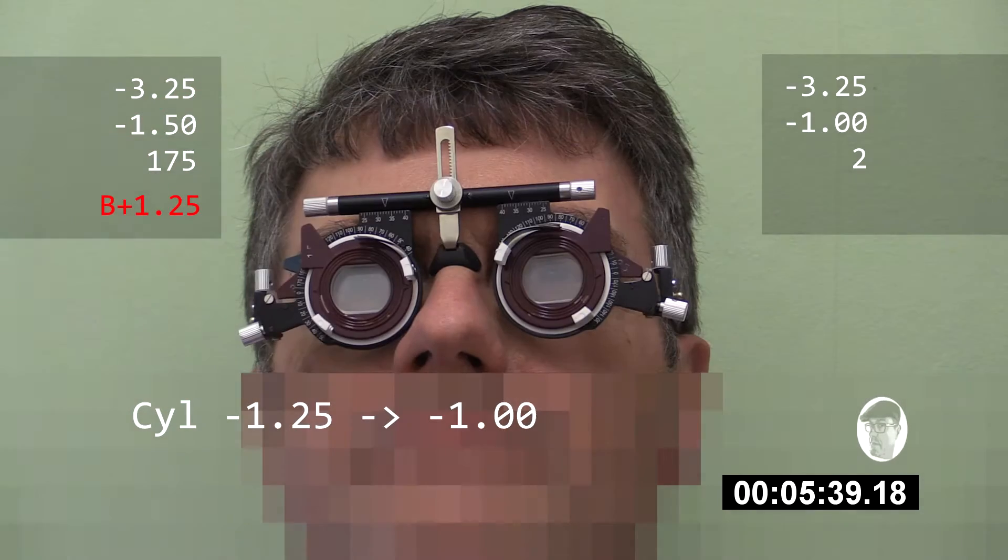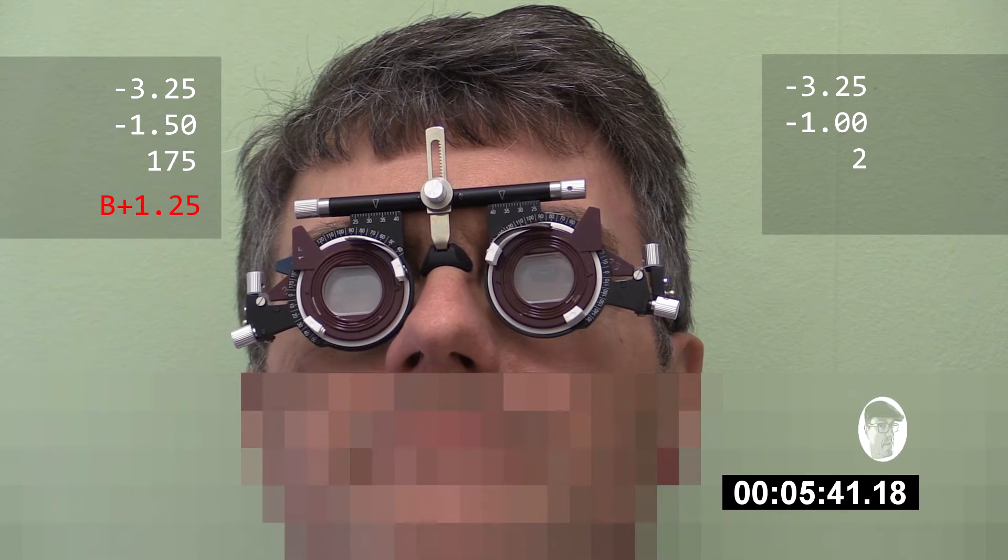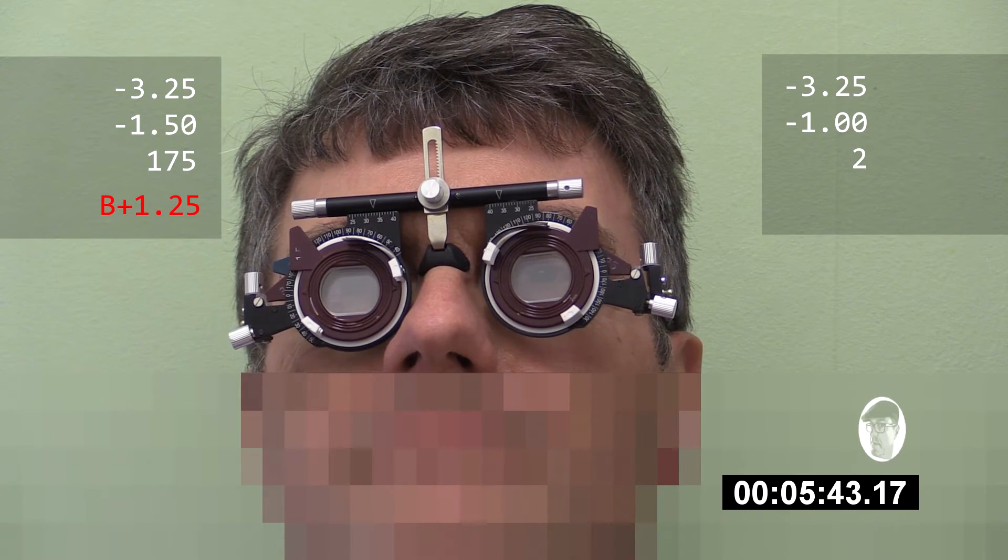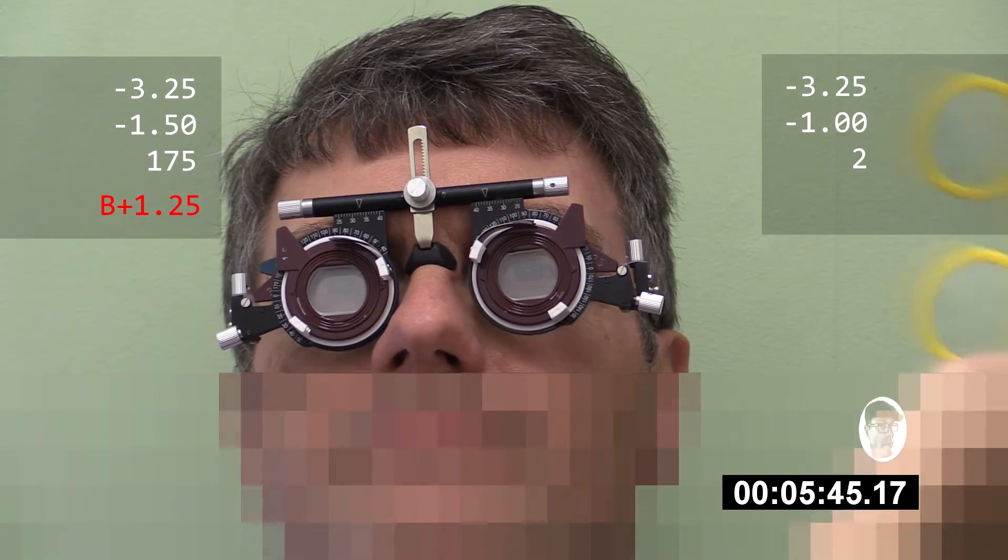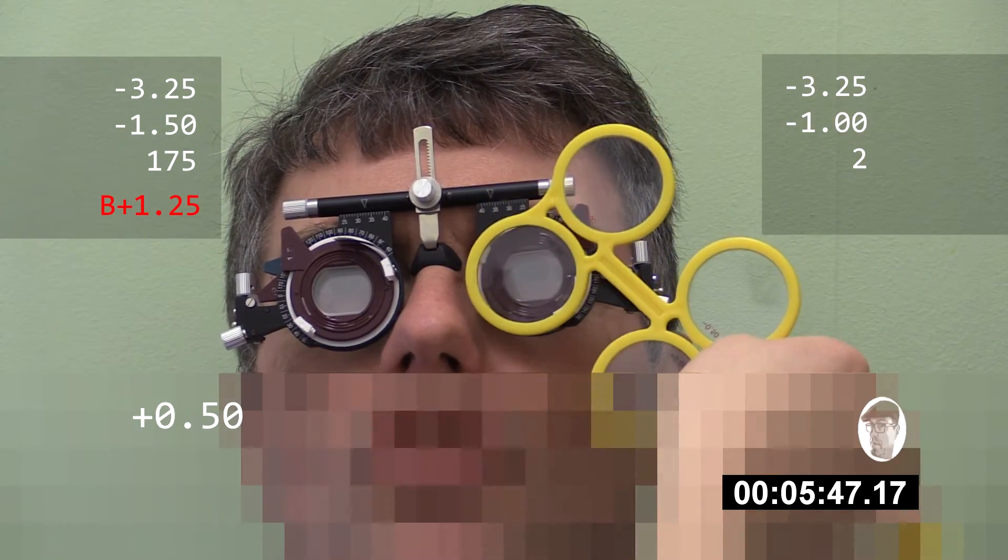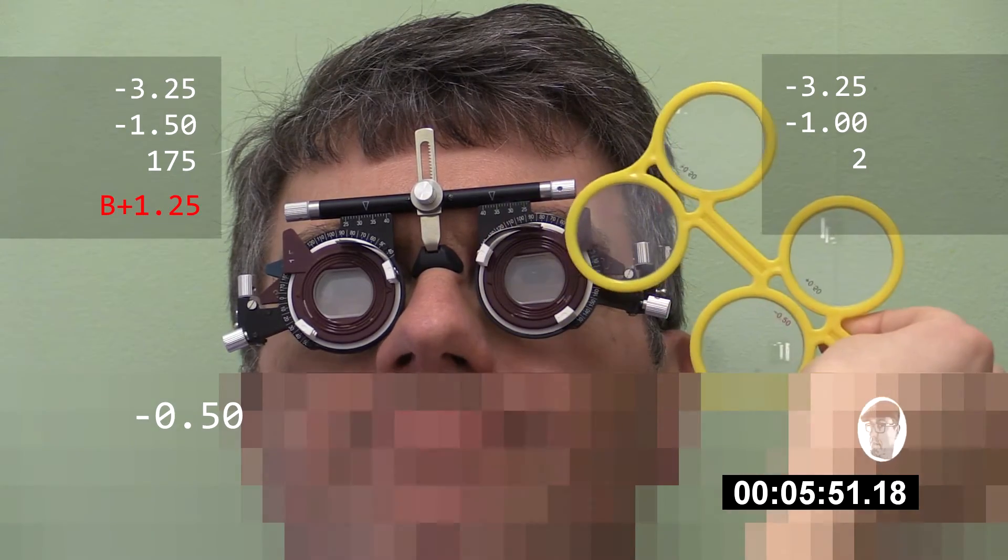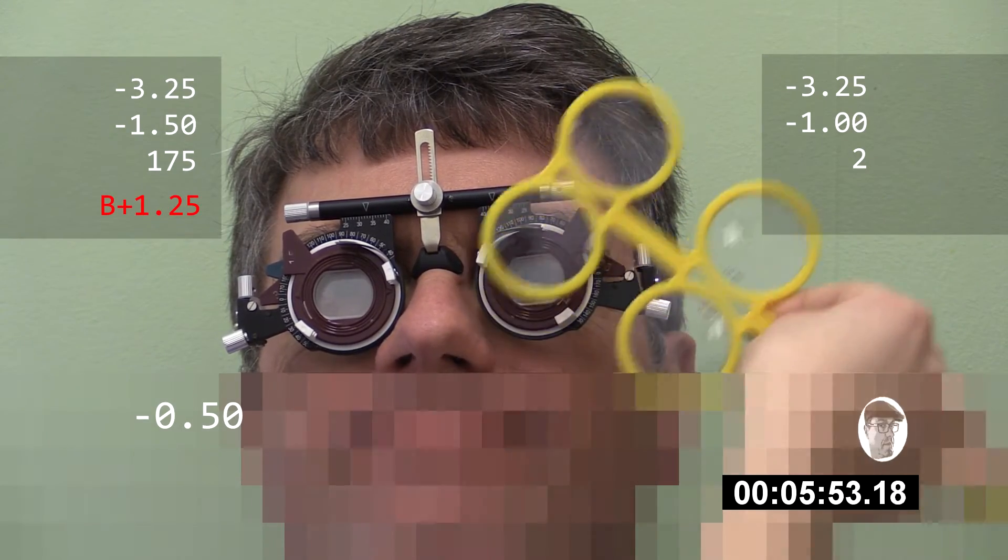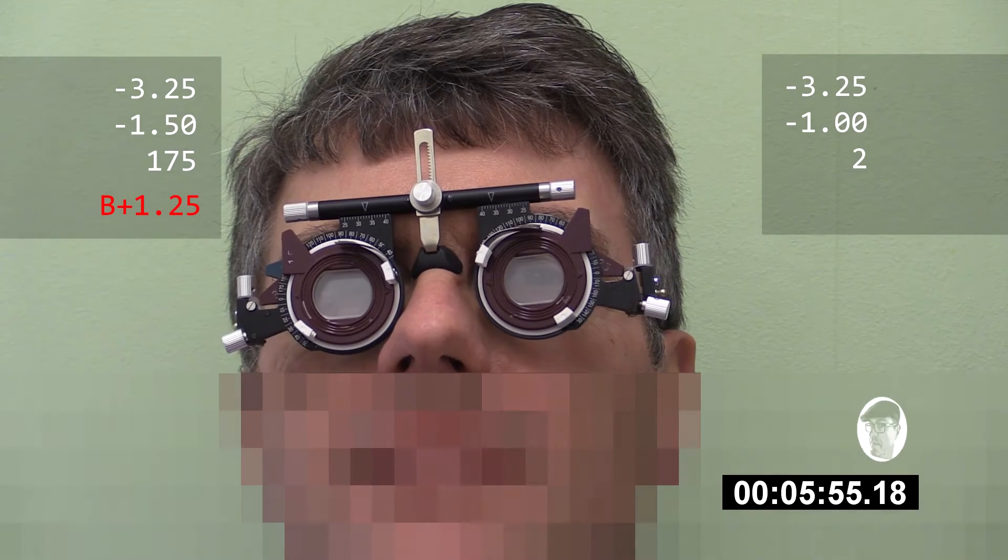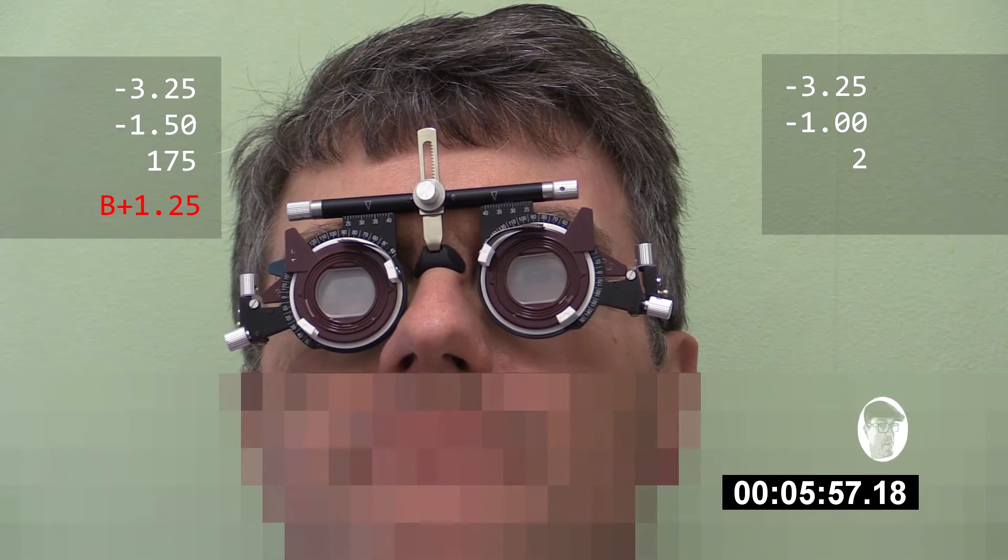Okay. And looking back at the chart, are those letters on the chart, the smallest that you can see, any clear with, without. And clear with or without. That's with. Worse with, yeah. Worse with. Perfect. Okay.